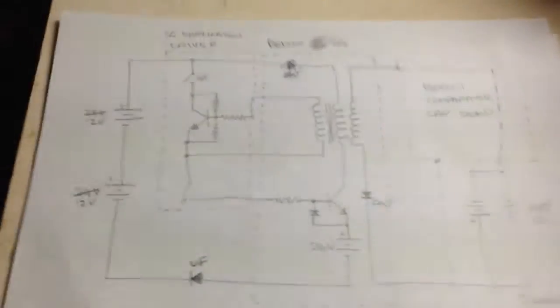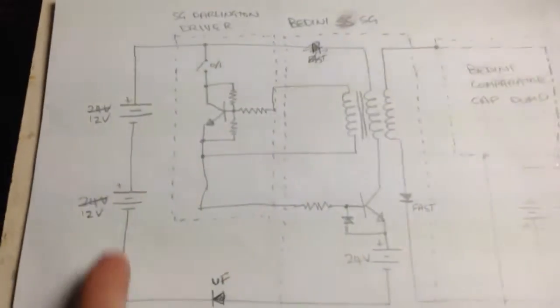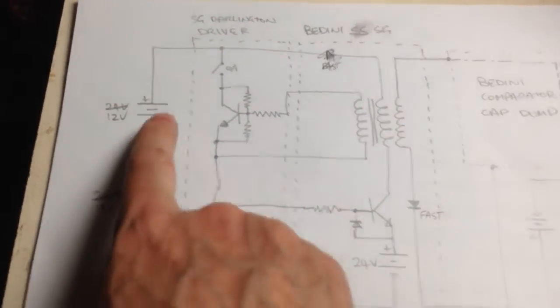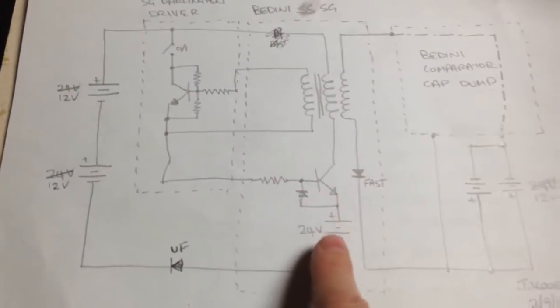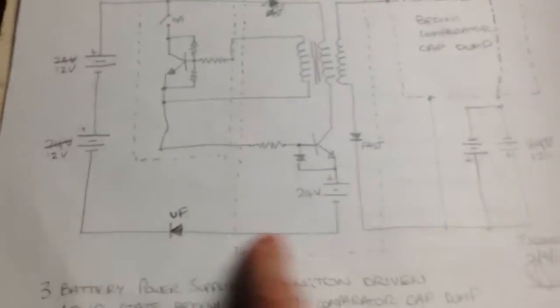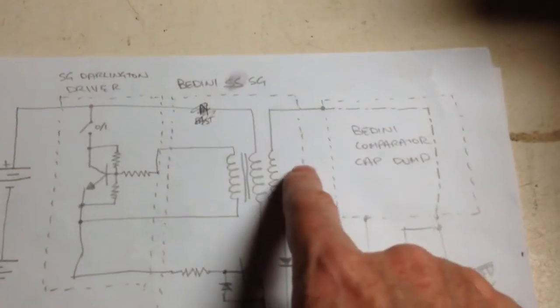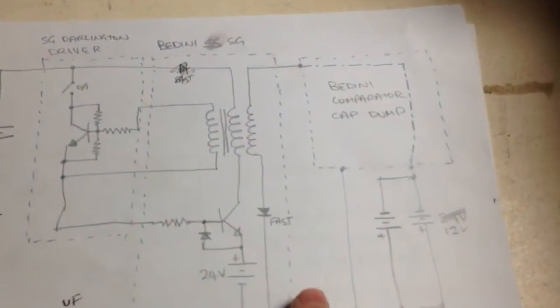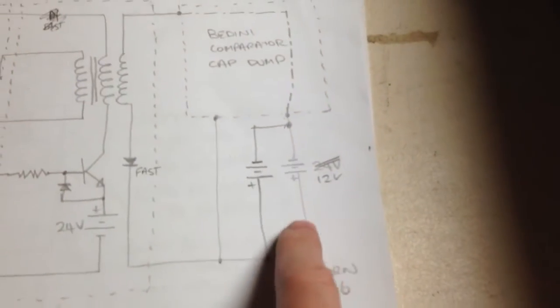Again that I think I showed last time. So we've got series batteries here, they run through the solid-state SG, negatives tied together, and then the pickup winding here is going to these two parallel batteries. Once again that comparator is not connected.